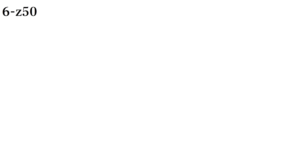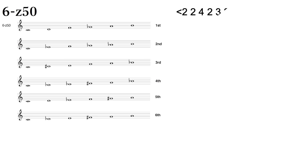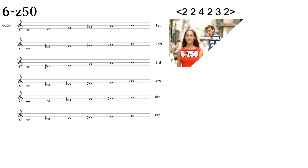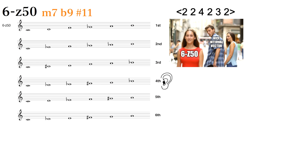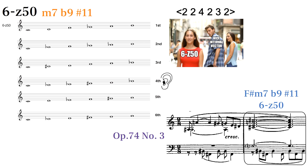6Z50 seems to have a lot of potential for application. Scriabin tends to use a voicing we might call a minor 7 flat 9 sharp 11. Here's an example of Scriabin using this set in measure 2 of 74-3.